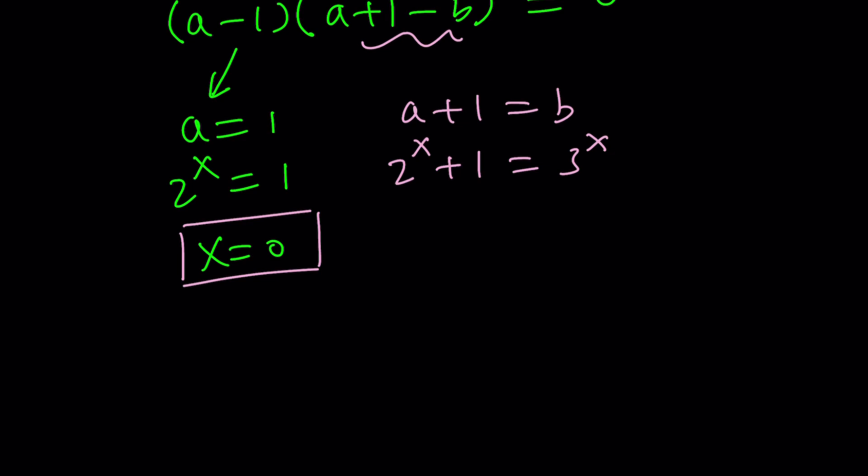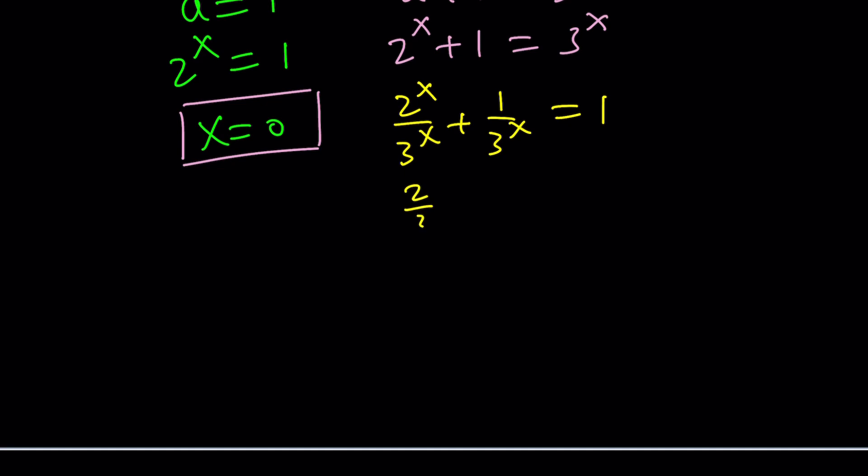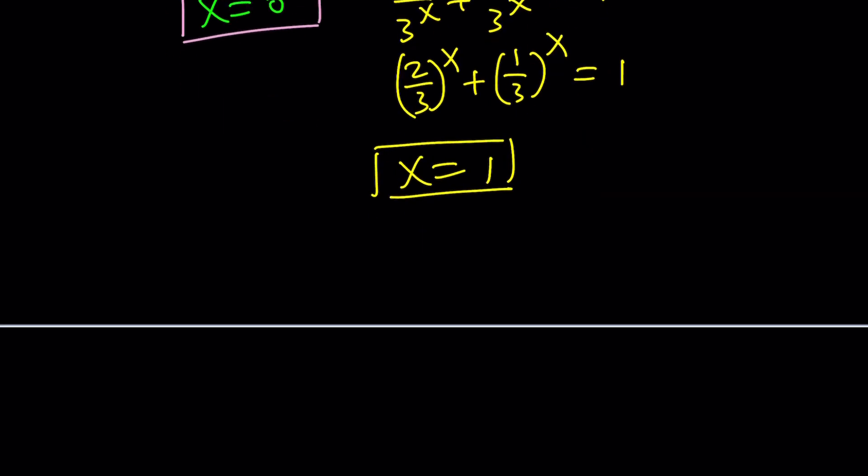So in that regard, we're going to go ahead and divide everything by 3^x. And that's going to be awesome because this is going to give us (2/3)^x + (1/3)^x = 1. What do you know? 2/3 + 1/3 = 1, right? So x = 1 is a solution. Guess what? It's the only solution.